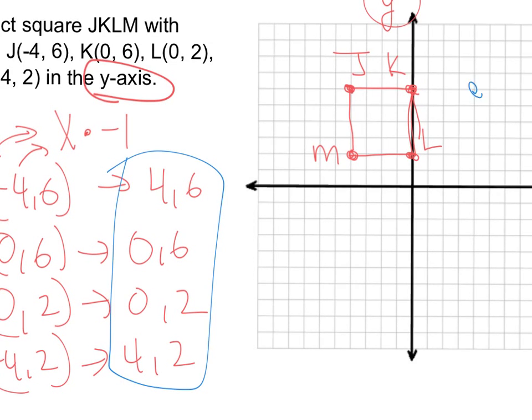So 4, 6, that's going to be the new J. 0, 6 is the new K, which is really the same. And then 4, 2 is going to be M. So there's going to be my square reflected over the y-axis.